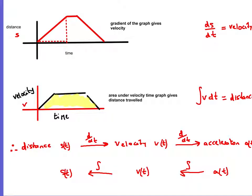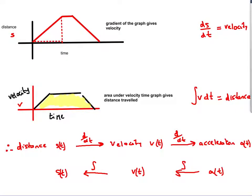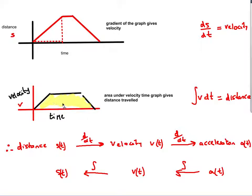A few questions all about kinematics for standard level IB mathematics. Let's look at a couple of key definitions. It's helpful to remember which way around things are going. If you have a distance-time graph, the gradient gives you velocity. If you have a velocity-time graph, the area underneath gives distance travelled — so the integral of velocity gives distance.